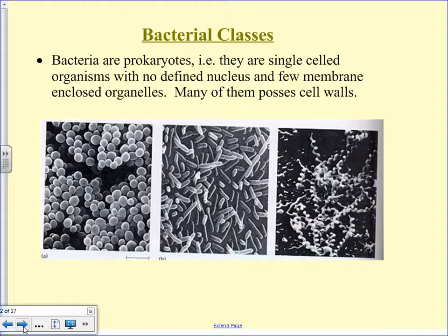Typically, prokaryotes come in three shapes: spheres, rods, and spirals. The spheres are called cocci. Anyone had strep throat? Strep throat is caused by the streptococcus bacteria — little spheres that get in the back of your throat and make it swollen. Bacteria make you sick by releasing toxins as they carry out their life cycles, and those toxins are what make you sick. The toxins that streptococcus bacteria release make your cells irritated and they swell, so your throat feels sore.